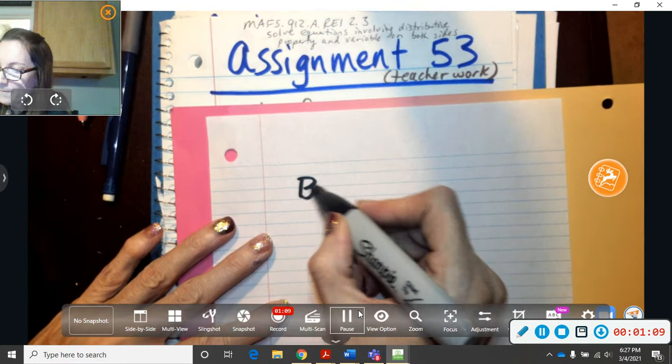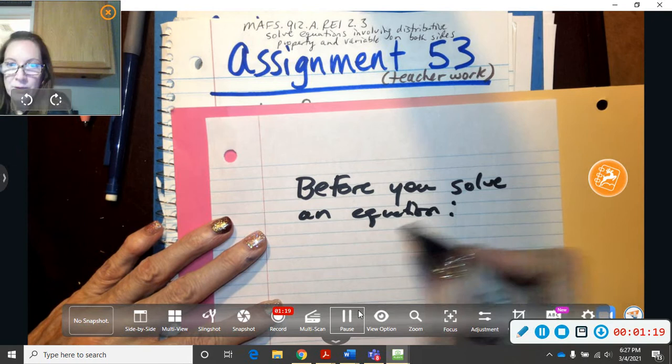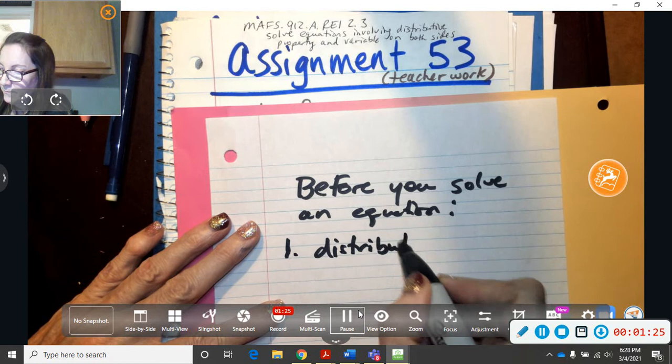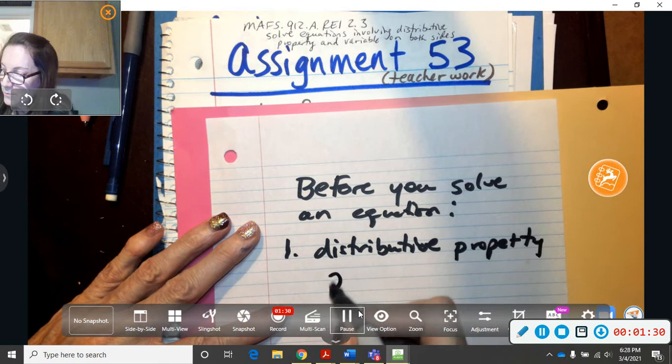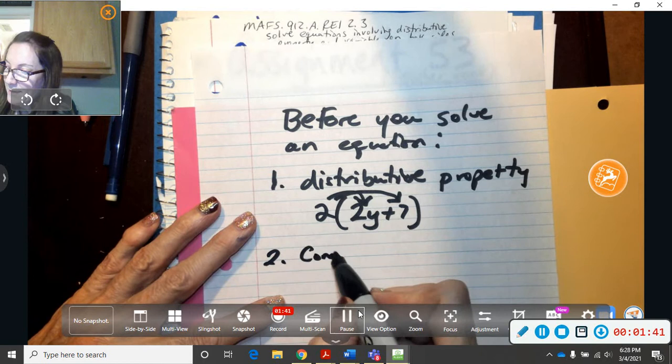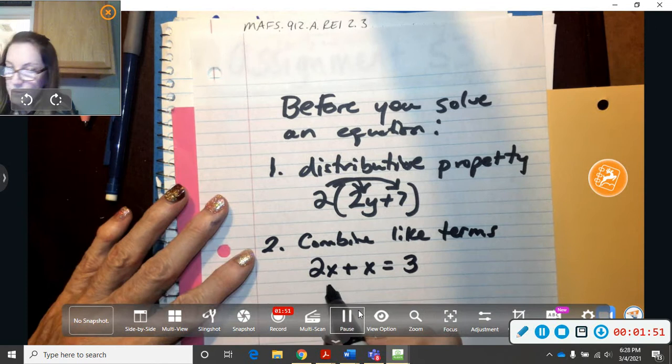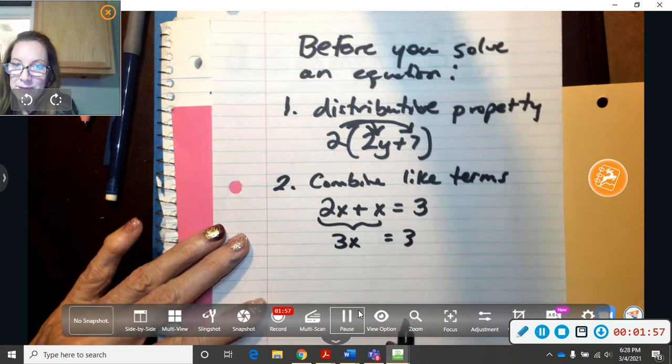Okay, before you solve an equation, you may have to do the distributive property. Remember, that's like, this is the distributive property. You may have to do that first. And you also may have to combine like terms. So you have to combine all these x's first into 3x equals 3. Okay, so that's combining like terms.